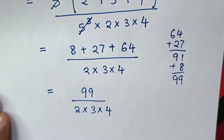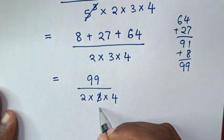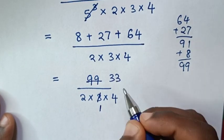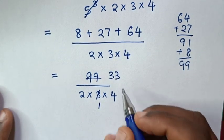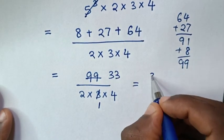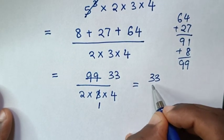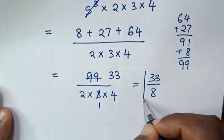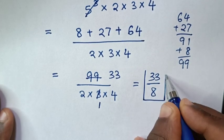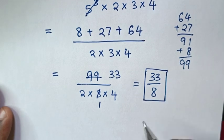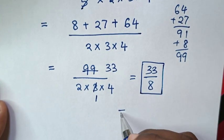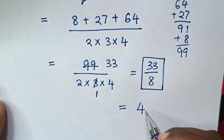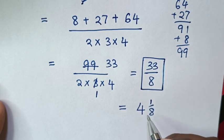Then to simplify, 3 will cancel: 99 divided by 3 is 33. Then it will be equal to 33 over 2 times 4 is 8. So this is the answer in improper fraction. Or it can be equal to 33 divided by 8 is 4 and 1 over 8.